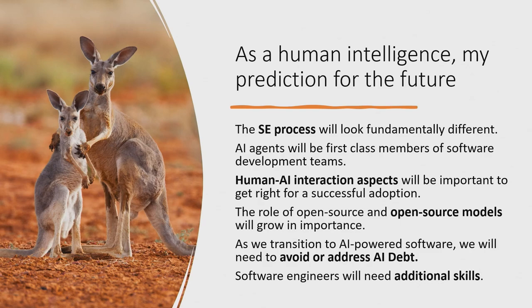My prediction is that the software engineering process will look fundamentally different in 5 to 10 years. I am fairly confident that AI agents are going to be a first-class member of software teams, and it's going to be really interesting to study how they work with humans. There is also a rise in open-source AI models, which is a very promising direction that will have a lot of influence on how software is being developed.